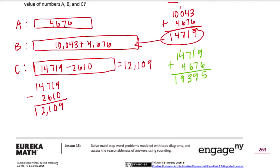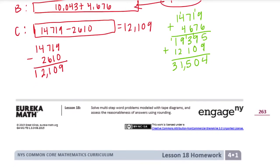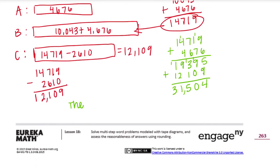So there's A and B. Now we just need to add C, 12,109. 5 plus 9 is 14, carry the 1. 1 plus 9 plus 0 is 10, carry the 1. 1 plus 3 is 4, plus 1 is 5. 9 plus 2 is 11, carry the 1. And 1 plus 1 plus 1 is 3. So we get 31,504. And our statement, we would say the total value of numbers A, B, and C is 31,504.